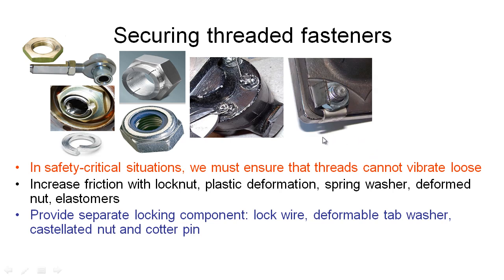Another option more commonly used in automotive applications is a deformable tab washer. We have a bolt or stud coming through with a nut, and an L-shaped washer where one end is folded down around an edge so it can't rotate. After tightening the nut, we hammer up the other end so it sits flush against one of the flat sides of the nut, preventing rotation. To remove the nut, we'd have to bend down this tab again before we could rotate and undo it.